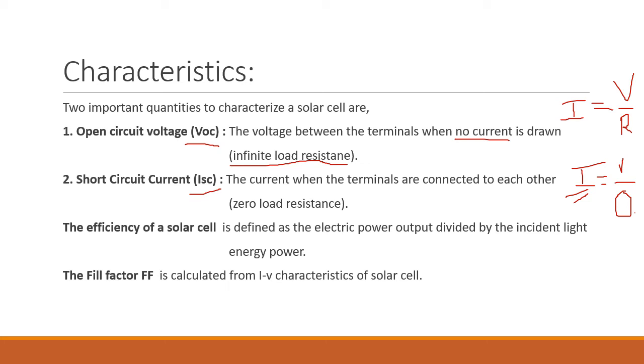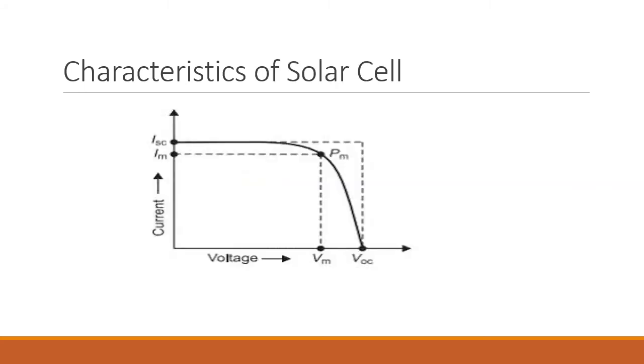Now, the efficiency of solar cell is defined as the electric power output divided by the incident light energy power output to input. We can say efficiency is the ratio of output to input and fill factor is calculated from the IV characteristics of solar cell. This is the IV characteristics of solar cell and from this characteristic, we can easily calculate the fill factor.